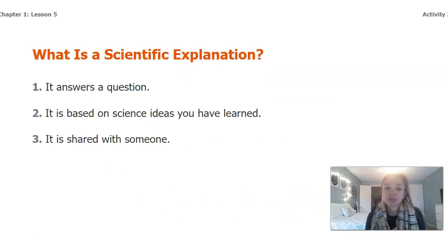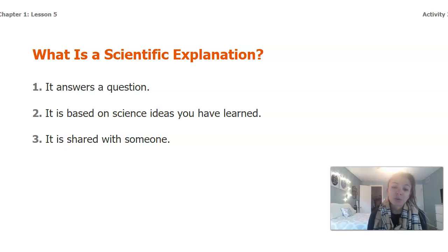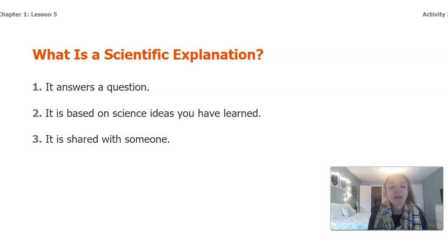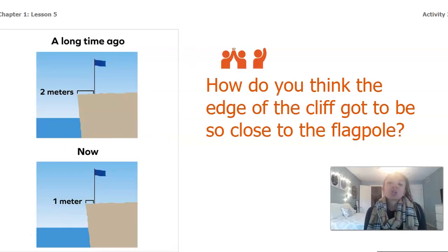What is a scientific explanation? There are three different things that an explanation does. First, it answers a question. Next, it is based on science ideas that you've learned — whether through readings, models, or things you visualize. The last thing is that it is shared with somebody: when you create a scientific explanation, it's something you're going to share with other people.